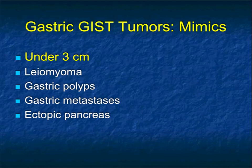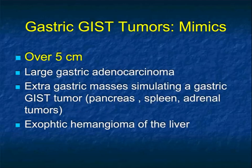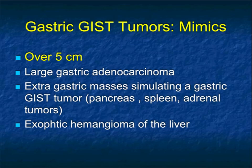There are many things that can mimic GIST tumors. On the differential: leiomyomas, gastric polyps, metastases, and ectopic pancreas — which is usually more vascular, so you usually can't distinguish it. Gastric metastases are increasing; we see them from melanoma and renal cell carcinoma. Renal cell mets are usually more vascular than typical GIST tumors. Over five centimeters, you could confuse it with a large gastric adenocarcinoma. Extra-gastric masses simulating GIST tumors can arise from the pancreas, spleen, or adrenal, and I'll show some hemangiomas confused with GIST tumors.